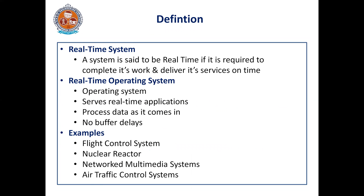First of all, we will see the definition for the real-time operating system. A system is said to be real-time if it is required to complete its work and deliver its service on time. A real-time operating system is an operating system intended to serve real-time applications that process data as it comes in, typically without buffer delays. Processing time requirements are measured in shorter increments of time.